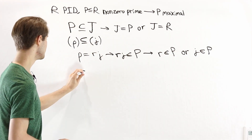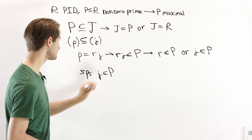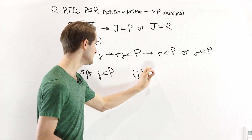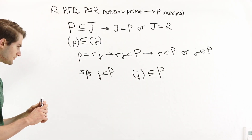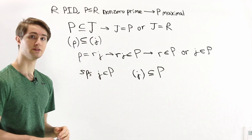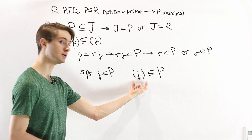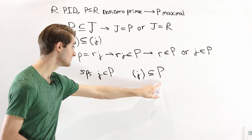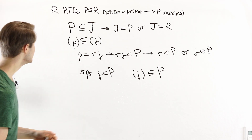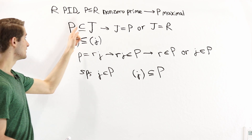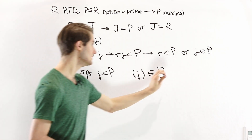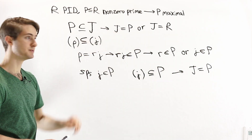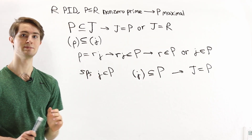First, let's suppose that j is in P. In that case, the ideal generated by j is going to be a subset of P, because j is in P and since ideals are closed under multiplication, all multiples of j are still in P. So ideal J is a subset of P. But we assumed that P was a subset of J. So if P is a subset of J and J is a subset of P, then J equals P. This satisfies the condition for a maximal ideal.